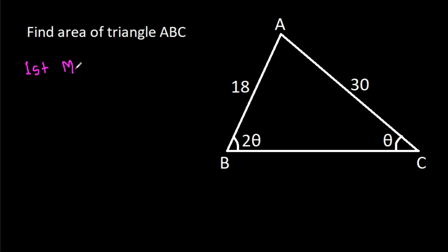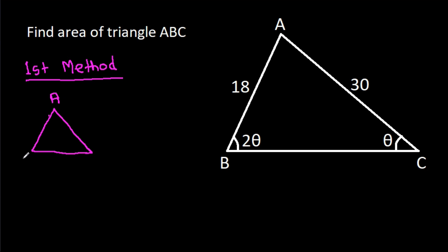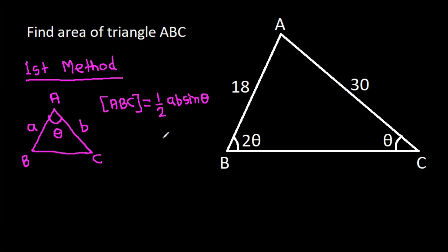Using the first method, in any triangle ABC, if AB is a, AC is b, and this angle is theta. Since angle ABC is 2 theta and angle ACB is theta, the third angle at A will be 180 degrees minus 3 theta.